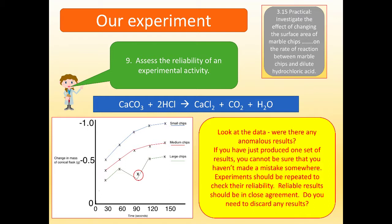Last thing to think about, number nine, the last experimental skill: we've got to assess the reliability of any experimental activity. So, this graph here is not some data we had. I've just made this one up. It's a bit of an exaggeration, really, because you can see that the X there in the red circle marks what we call an anomalous result. Let's look at the data. Were there any anomalous results? We can say here, yes, there was. Now, if you've just produced one set of results, the problem is you cannot be sure you haven't made a mistake somewhere. An experiment should be repeated to check reliability. Reliable results should be in close agreement. Do you need to discard any results?